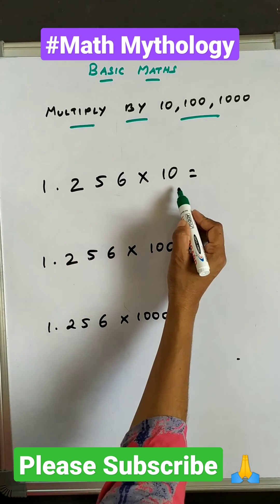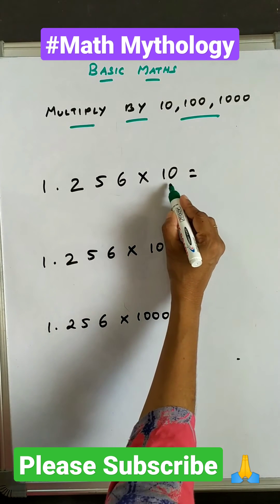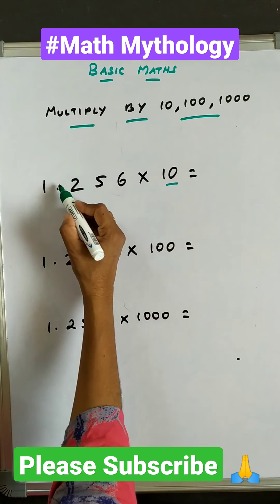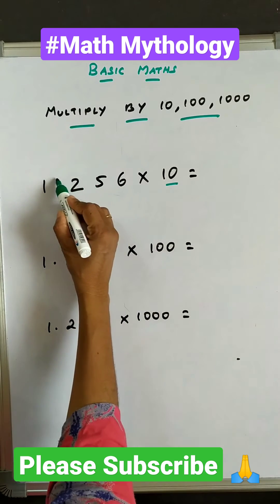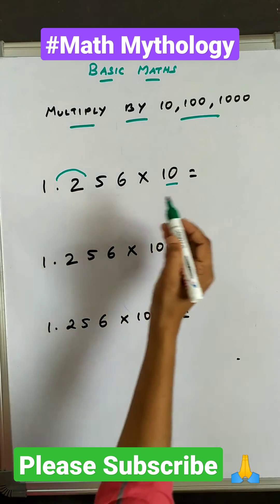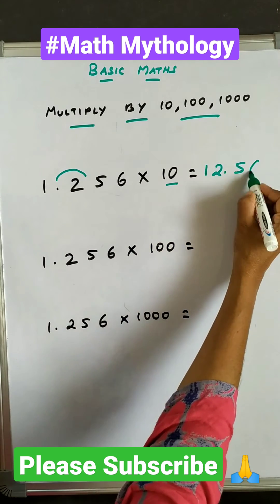1.256 when we multiply by 10, we have in 10 one zero. So move the decimal towards the right one number. We get 12.56.